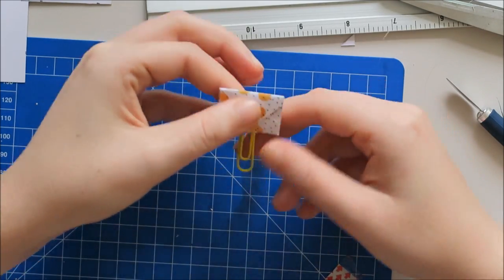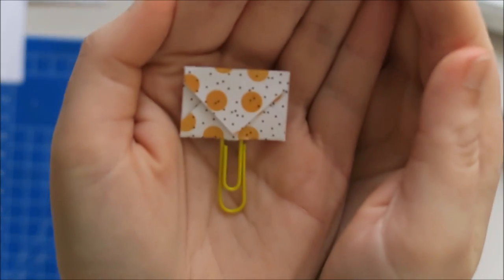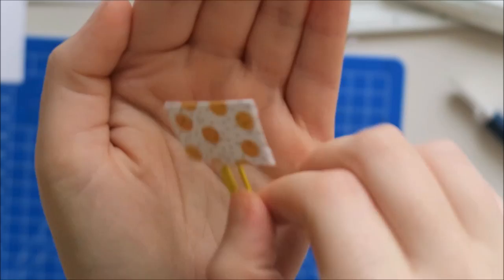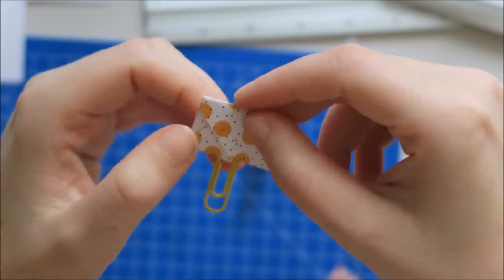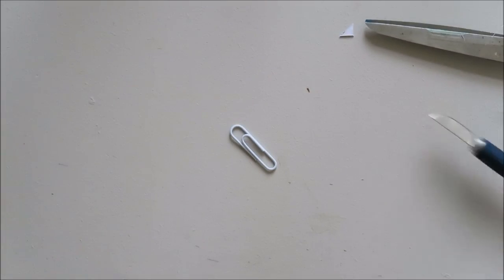And now we have a little small envelope on the paperclip. And you can embellish it if you want. I just left it like this. It's so cute. So small. It's perfect for snail mail or pocket letters or even your planner.